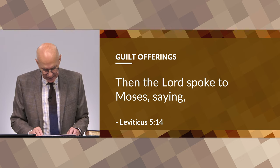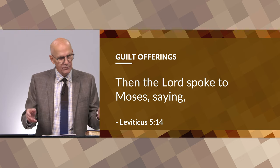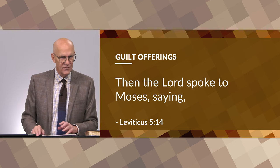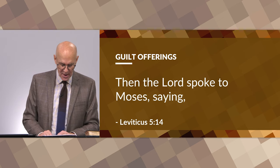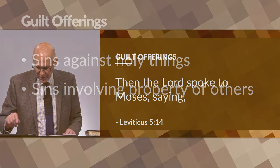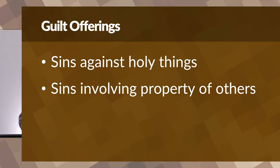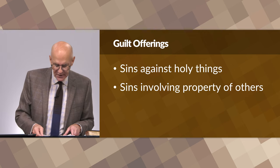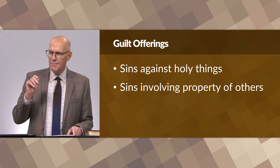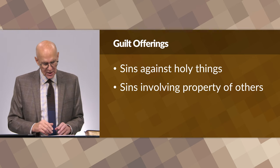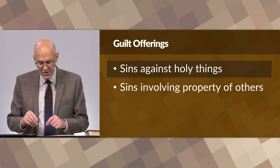Various translations call the guilt offering the 'trespass offering,' the 'reparation offering,' or the 'sacrifice to make things right.' The guilt offerings were prescribed for two types of sins: sins against the Lord's holy things or breaking his commandments, and sins where someone's property was taken or damaged. Unlike other types of sacrifices, the guilt offering included some manner of restitution or compensation to the injured party.